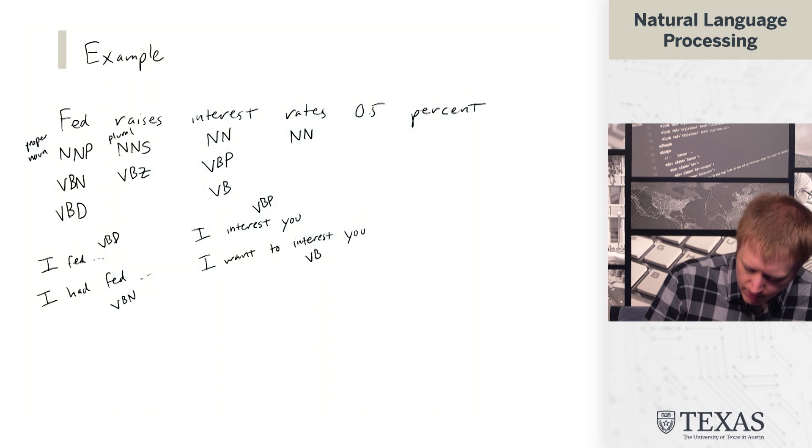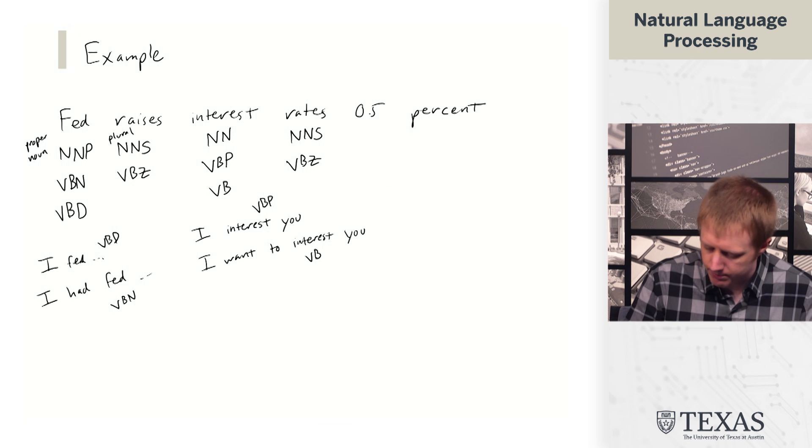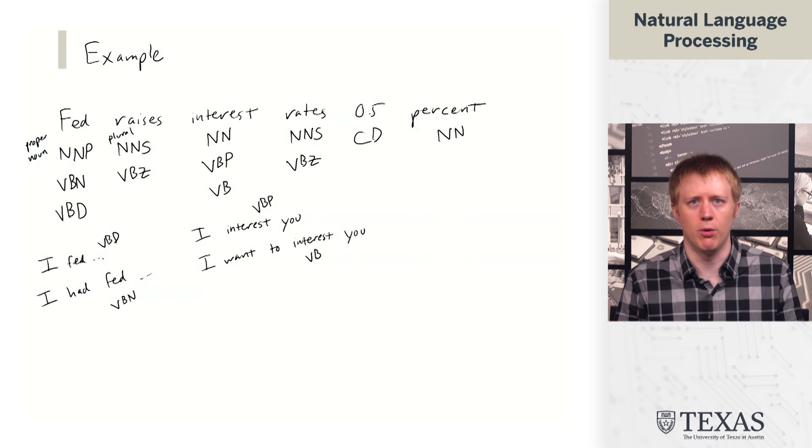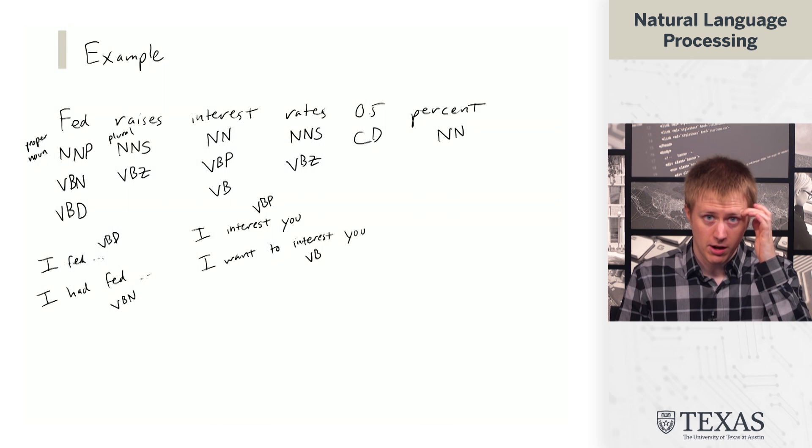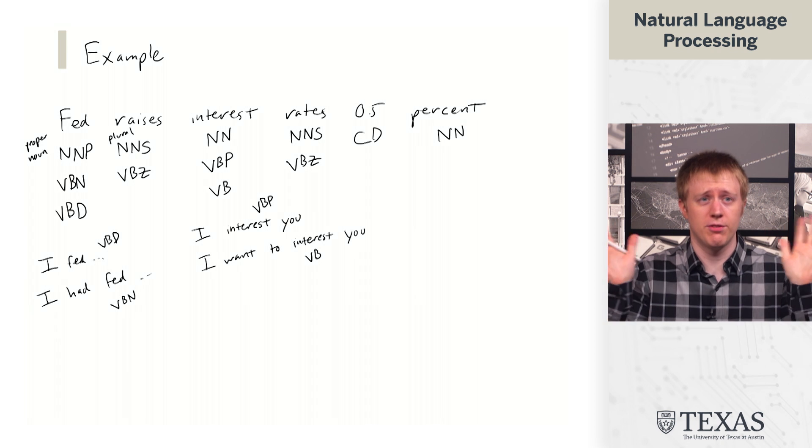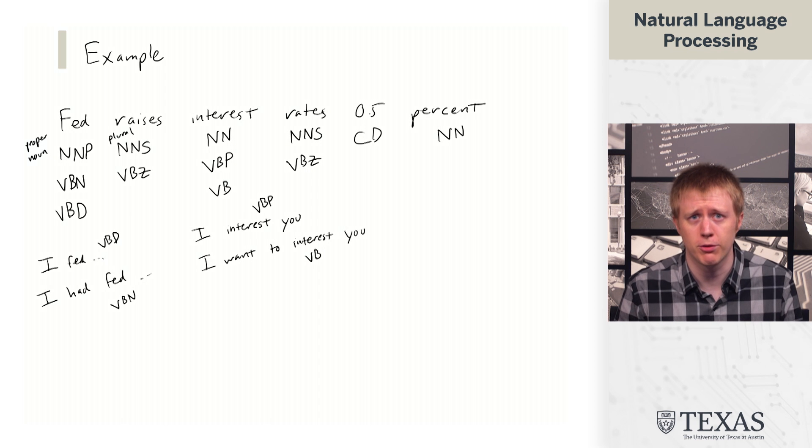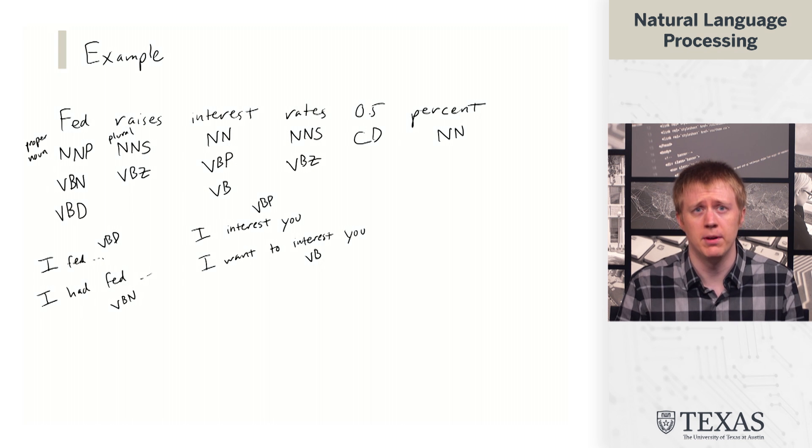Rates—again, plural noun or verb. And then 0.5 and percent each only have one interpretation. But even setting aside all of the crazy tags that can't show up in this sentence, we actually get a pretty large number of different interpretations. The number of paths through this sentence is 3 times 2 times 3 times 2, which is 36. So we're going to need a model that can look at all of these 36 paths and decide what is actually reasonable.